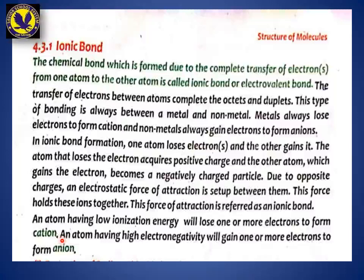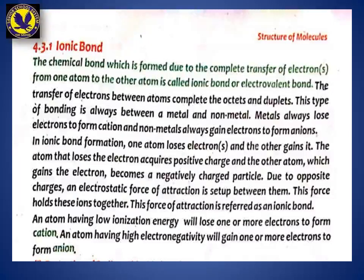An atom with high electronegativity will gain one or more electrons to form an anion. Atoms with high electronegativity also have high ionization energy, meaning their electrons are more tightly bound. Therefore, such atoms will gain one or more electrons, becoming negatively charged anions. This was the complete explanation of ionic bonds as written in the book paragraph.